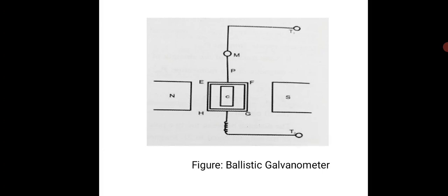From the figure, we can observe that C is placed inside the EFGH coil. A soft iron cylinder is placed midway between two poles of the magnet within the frame of the coil, and a small concave mirror is attached to the wire.